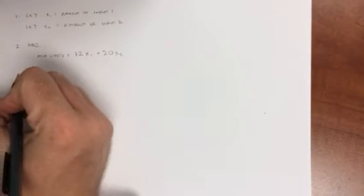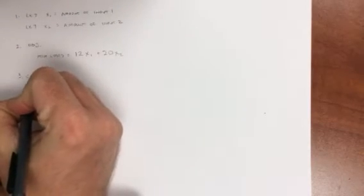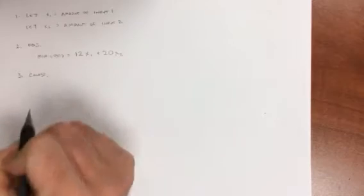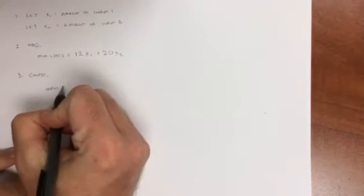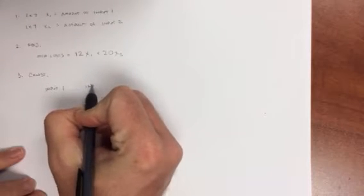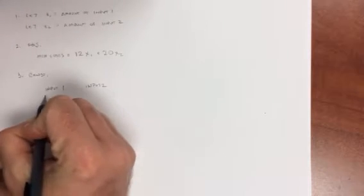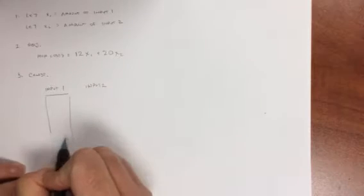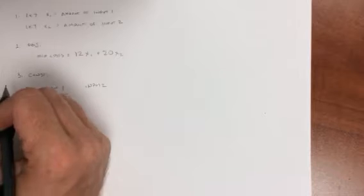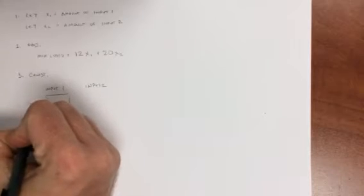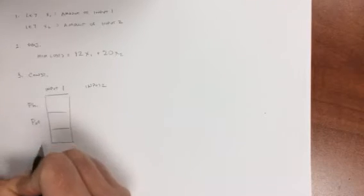The third step is to identify or define the constraints. So I have input one and input two. Well, fertilizer needs to have three characteristics. It needs to have phosphates, potash,